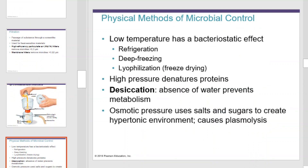Other physical methods of microbial control include low temperature, which has a bacteriostatic effect — refrigeration, deep freezing, and lyophilization are ways of controlling microbial growth. High pressure denatures proteins. Desiccation, or the removal of water, can prevent metabolism and prohibit microbial growth. Osmotic pressure using salt and sugar to create a hypertonic environment can cause plasmolysis.